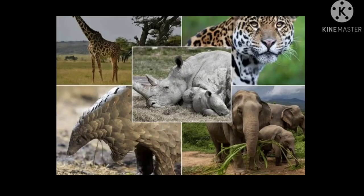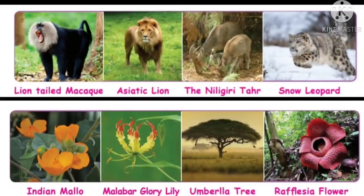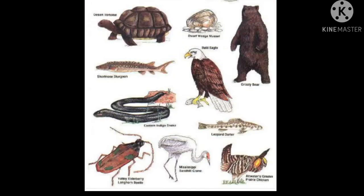An endangered species is one that exists in very small numbers. An animal is said to be endangered if its population is currently less than 50, or less than 250 over the past 3 years — that is, roughly one animal per year. If a species falls below 50, or below 250 over 3 years, it is classified as endangered.